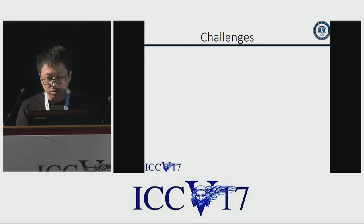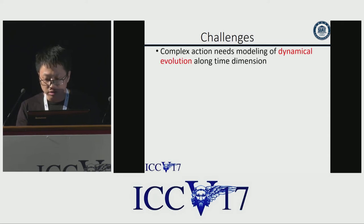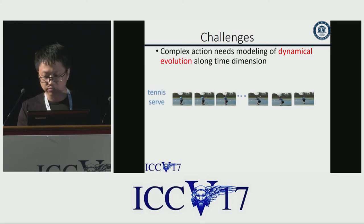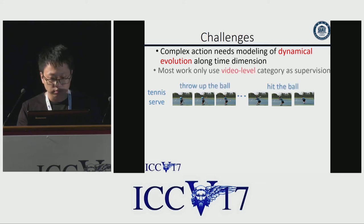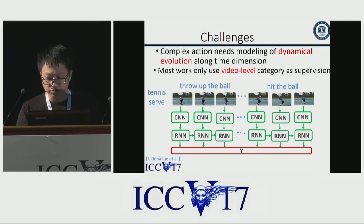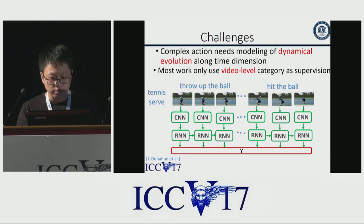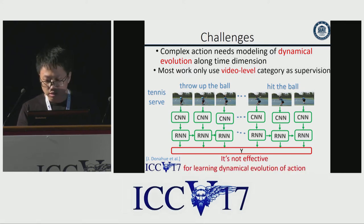The challenge is that complex action needs modeling of dynamic evolution, yet human action may be composed of different sub-actions. For example, to perform a tennis serve, the actor needs to throw up the ball and then hit it. Most existing approaches use video-level category supervision to train the network, where the same video-level category is used for every time step, which is not effective for learning dynamic evolution of action.